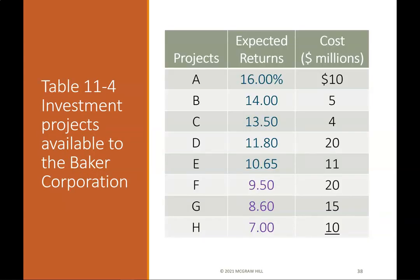Table 11-4 shows investment projects available to Baker Corporation — projects A through H with their expected returns and cost in millions. Figure 11-3 is a bar graph showing the weighted average cost of capital, the amount of capital in millions, and percentage for Baker Corporation's investment projects.